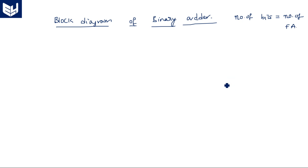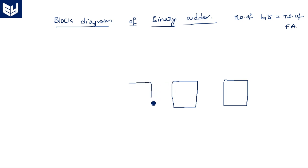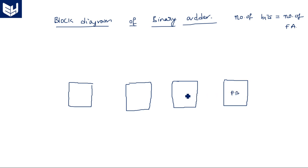Since there are four bits — A0, A1, A2, A3 — we need four full adders. The number of full adders always depends on the size of the input. We draw full adder 1, full adder 2, full adder 3, and full adder 4.